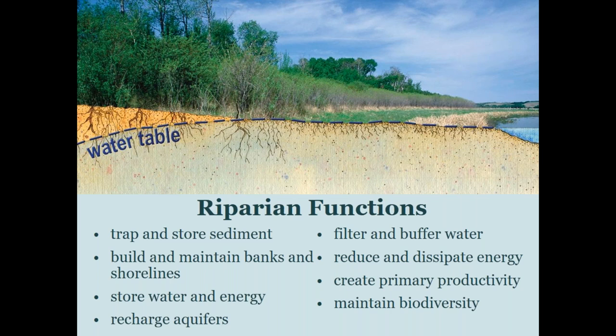The functions that happen in riparian areas are related to water quality, water quantity and supply, and primary productivity and biodiversity — important not only to fish and wildlife, but also to humans. The eight main functions that riparian areas perform include: trapping and storing sediment, building and maintaining banks and shores, storing water and energy, recharging aquifers, filtering and buffering water, reducing and dissipating energy, creating primary productivity, and maintaining biodiversity.